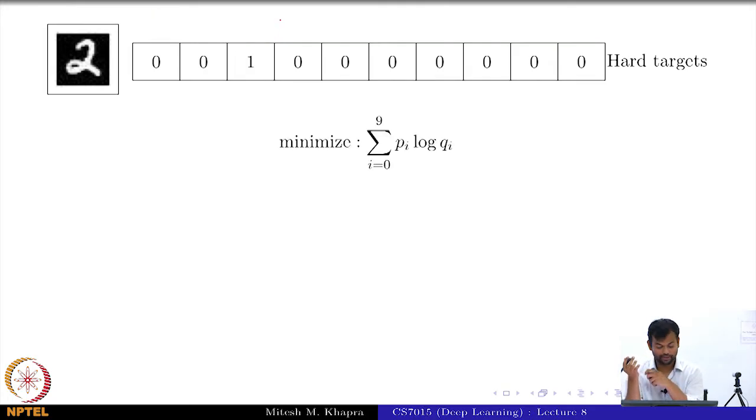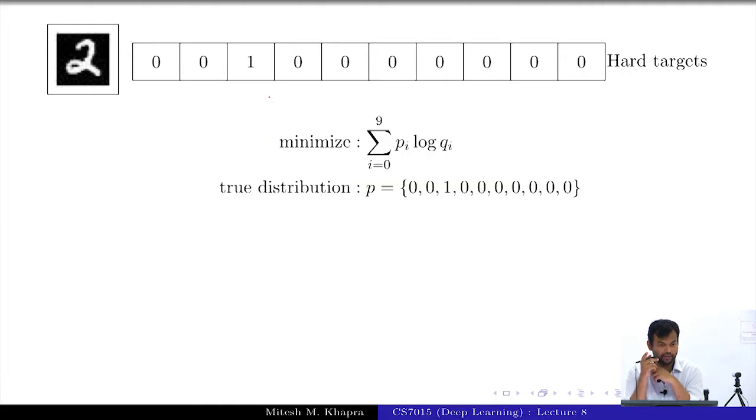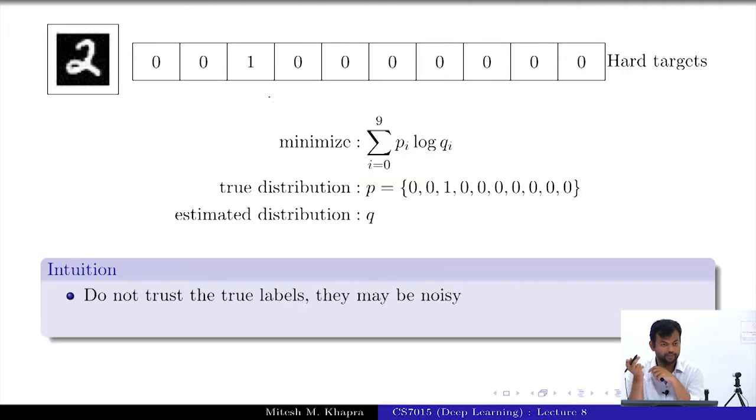So, what you could do is actually what you try to do is minimize this quantity P_i log Q_i, where what is P_i? P_i is this vector which was given to you, and what is Q_i? The predicted probabilities.